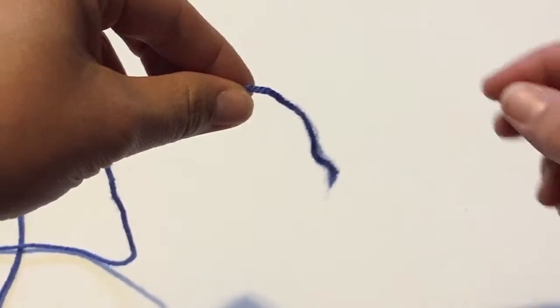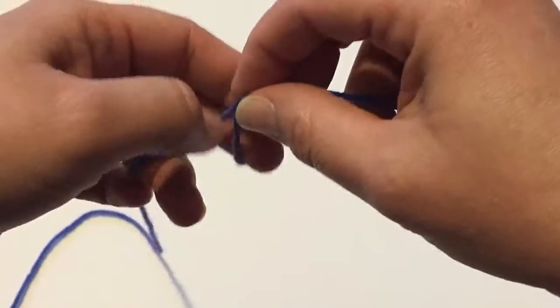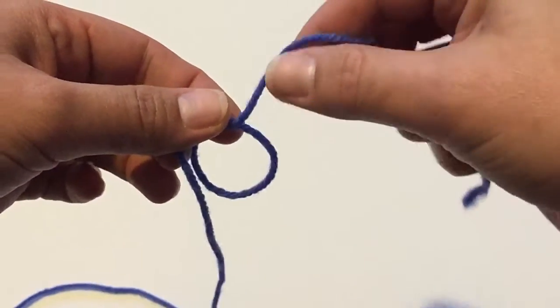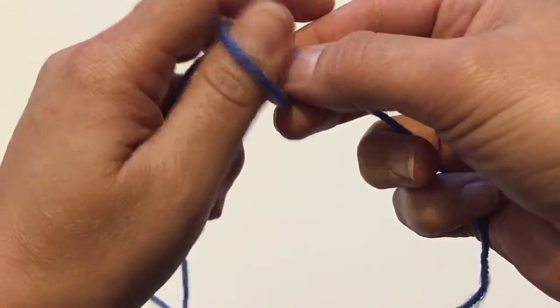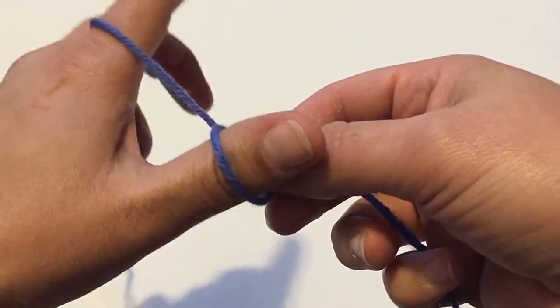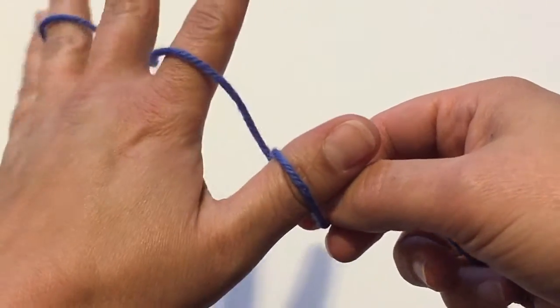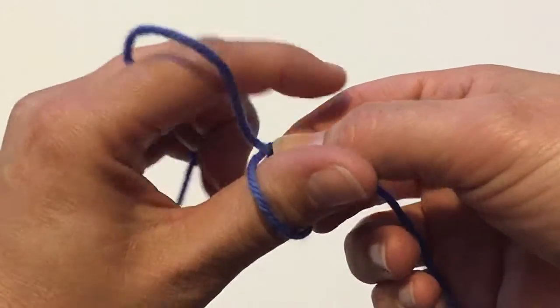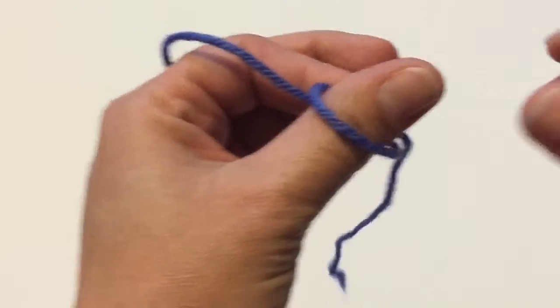To start the cast-on, make sure that you have the tail facing toward the right. Then you're going to create a loop so that the part with the end is looped in the front. I usually take this loop and put it on my thumb and then tension the part of the yarn that's going toward the ball over your index finger and take the loop and hold it so it doesn't come undone.